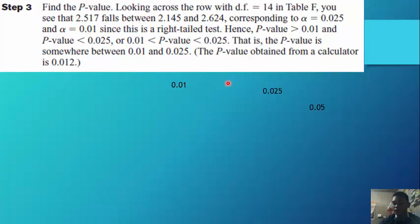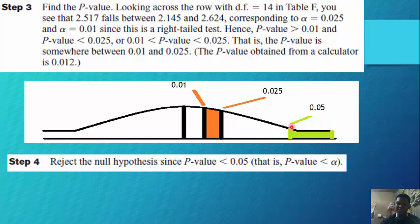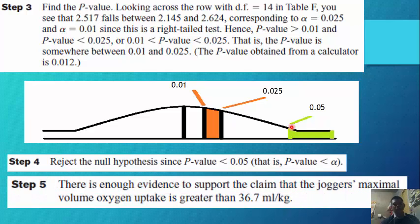The p-value is somewhere between 0.01 and 0.025; the p-value obtained from the calculator is 0.012. Step 4: Reject the null hypothesis since the p-value is less than alpha (0.05). There is enough evidence to support the claim that the joggers' maximal volume oxygen uptake is greater than 36.7.